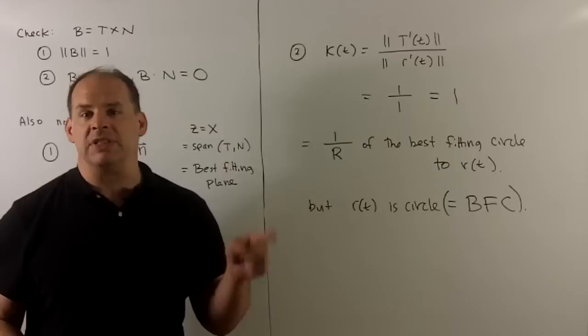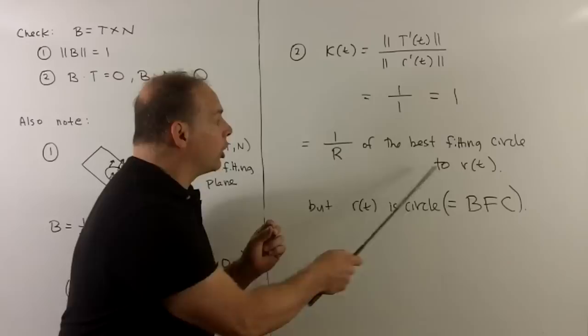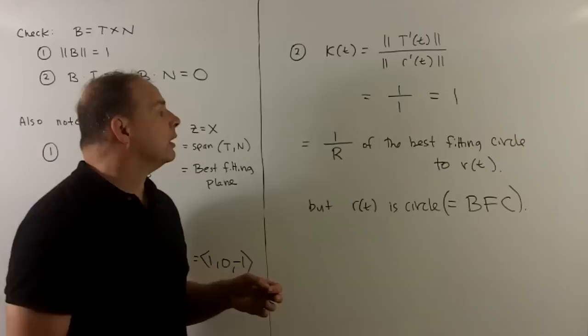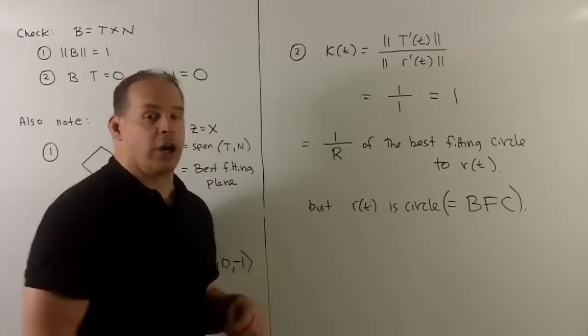Next, if we compute the curvature, we're going to take the length of T'(t) over the length of r'(t). We've seen that both these are equal to one, so the curvature is equal to one. Now remember, what's the curvature? That's just one over the radius of the best fitting circle to our curve. That circle is going to live in the best fitting plane, spanned by T and N. Now we know our curve is actually a circle, so it's going to be its own best fitting circle, and since that circle has radius one, curvature has to be one over one or one itself. So that checks out also.